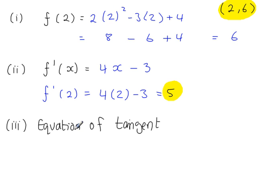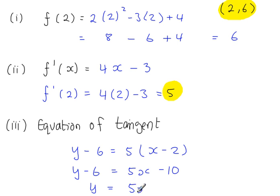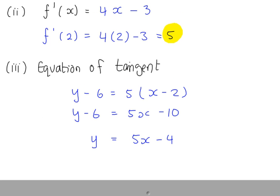So the equation of the tangent: y minus the y-coordinate equals the gradient times (x minus the x-coordinate). So y minus 6 equals 5(x minus 2), giving y minus 6 equals 5x minus 10, so y equals 5x minus 4.